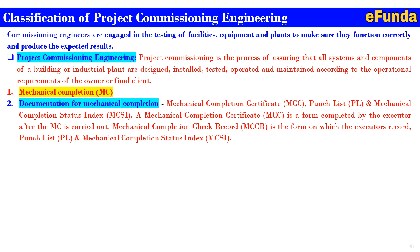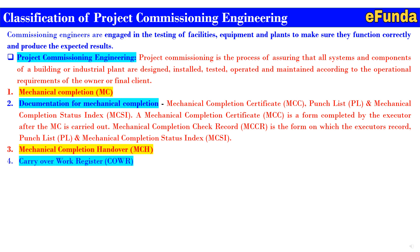A mechanical completion certificate (MCC) is a form completed by the executor after MC is carried out. The mechanical completion check record (MCCR) is the form on which the executor records the punch list and mechanical completion index status. Third, the mechanical completion handover is the activity of handing over from mechanical completion to commissioning at the commissioning package level, documented by the ready for commissioning certificate (RFCC). Fourth, the carry-over work register (COW) contains item numbers and cross-references to the punch list or MCCR, marked up on drawings or sketches and included in the record.